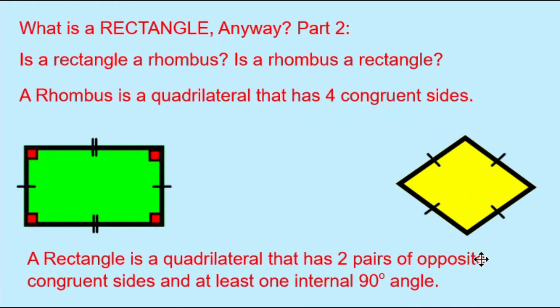Now, the definition of a rectangle. It's a quadrilateral that has two pairs of opposite congruent sides and at least one internal 90-degree angle. Our green rectangle is following these rules, but our yellow rhombus is not.